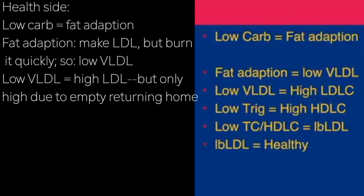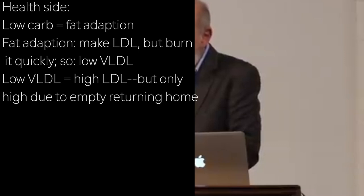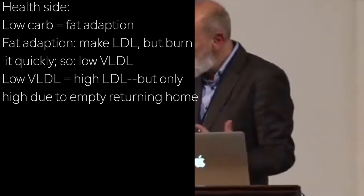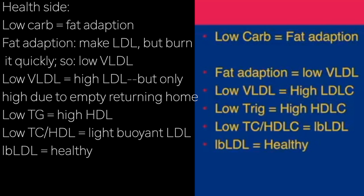If you look on the health side, low carb means fat adaptation. Fat adaptation means that you make LDL because you're focused on fat for energy, but you burn it quickly. So the VLDL is low because it never really stays in the blood long enough to have high triglycerides. And then low trigs through CETP means you're not using up your HDL. Your HDL is at a high normal level. And your low total cholesterol HDL ratio tells you that your LDL is in the large buoyant form — its normal transport form. Large buoyant LDL is the healthy form.